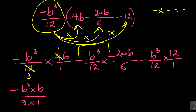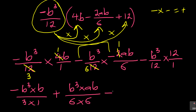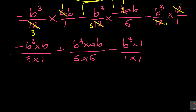These two negatives become a positive - minus times minus is plus. So you have plus. For the next term, the 2 can cancel with 6, or the 2 goes into 12 six times. So: plus b cubed times ab over 6 times 6. Then for the last term, minus, and 12 goes into 12 once, giving minus b cubed times 1 over 1 times 1.